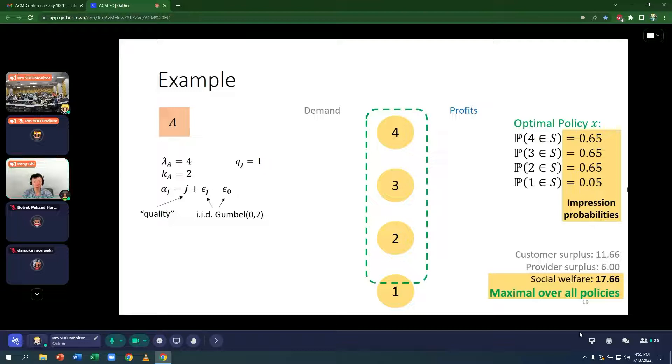One question you may ask is, in specifying the optimal policy, why didn't I need to specify which subset is recommended at the same time? The answer is that it actually doesn't matter. Any way of recommending two providers that satisfy these impression probabilities is equally optimal. And the reason is that these are the endogenous profits and demand. And what you see is that what happens under this policy is that the higher quality providers set higher prices which exactly neutralizes their quality. The quality 4 provider set a profit of 3. The quality 3 provider set a profit of 2.